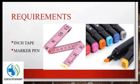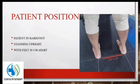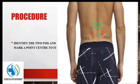We need a marker and an inch tape to conduct this test. To conduct the test, have the patient in barefoot, standing upright with feet hip-width apart. Now, we have to palpate the two posterior superior iliac spines — that's the PSIS — and mark a point center to it.